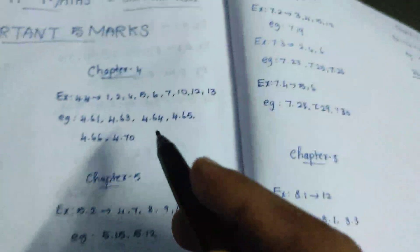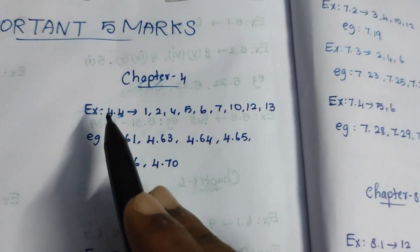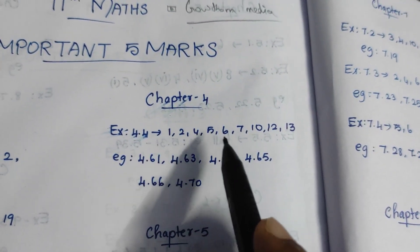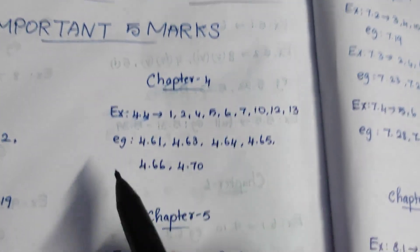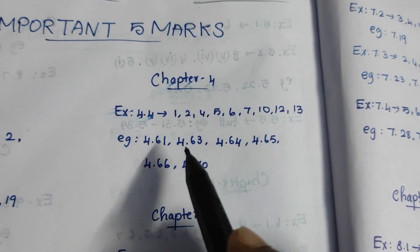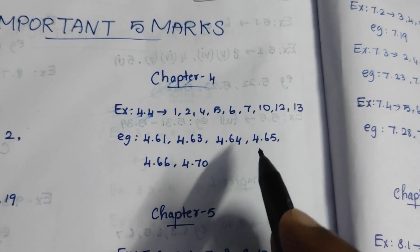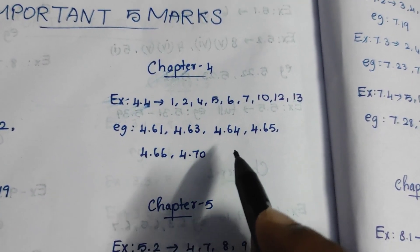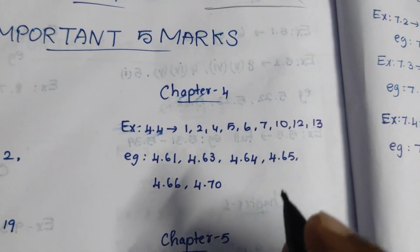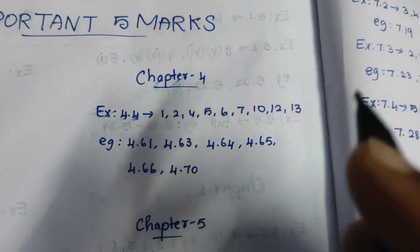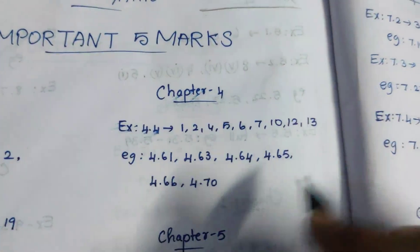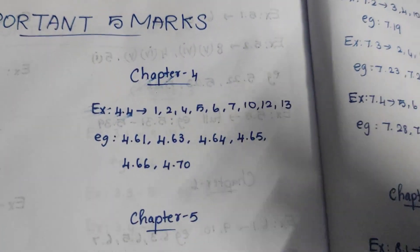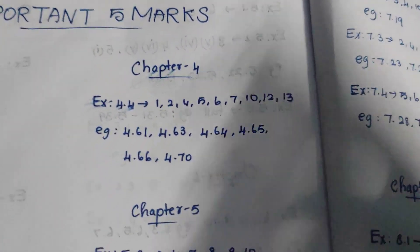This is the third chapter. The fourth chapter is Exercise 4.4: 1, 2, 4, 5, 6, 7, 10, 12, 13. Then the examples are 4.61, 4.63, 4.64, 4.65, 4.66, 4.70. You will see it here in the matrix, probabilities, statistics, first chapter, and the next chapter.